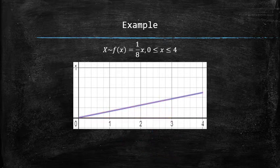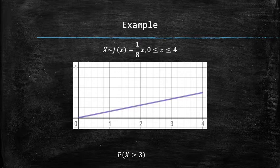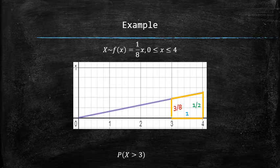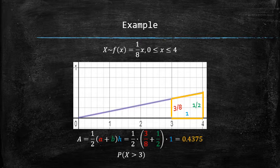To find the probability that x is greater than 3, we will look for the area under the curve between 3 and 4. This region is a trapezoid with bases 3/8 and 1/2 and height equal to 1. The area can be found using the formula for the area of a right trapezoid and is equal to 0.4375 or 43.75%.